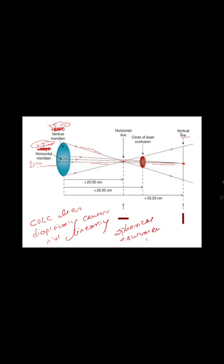The spherical equivalent is: sphere plus cylinder divided by two. In this case, sphere is plus three and cylinder is plus two, so: plus three plus (plus two divided by two) equals plus four. The distance is 25 centimeters: 1 divided by 0.25 equals four diopters. Another direct way: add five diopters plus three diopters, divided by two, which also gives four diopters.